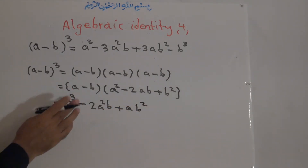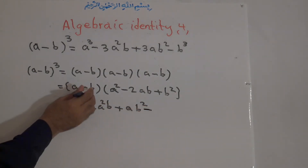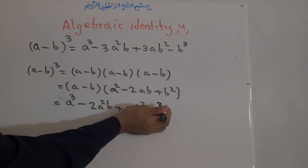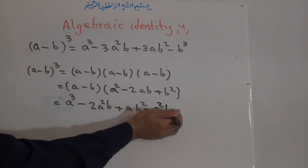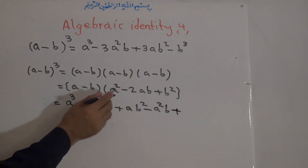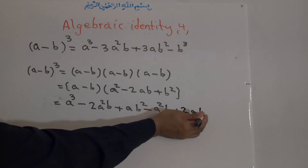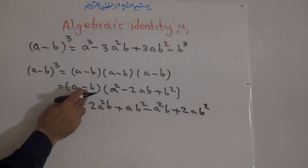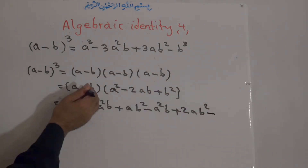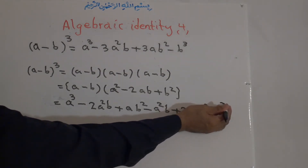Now for the second term: minus times positive is negative, so b times a squared equals a squared b. Then minus times minus is positive, so b times 2ab equals 2ab squared. And the last one: minus b times b squared equals minus b cubed.